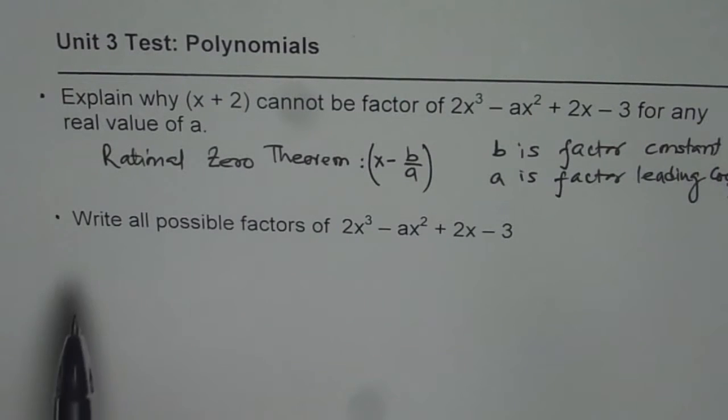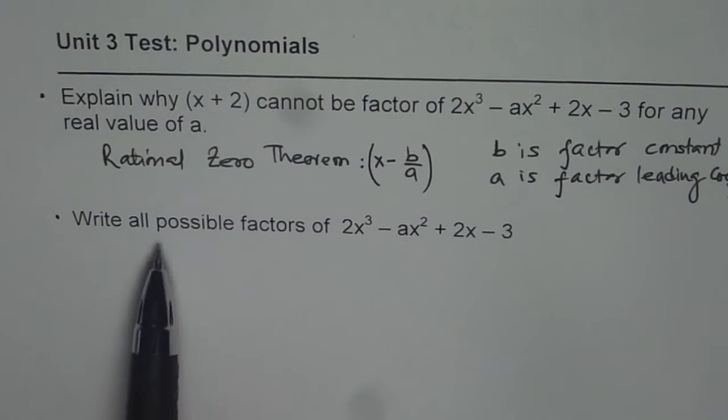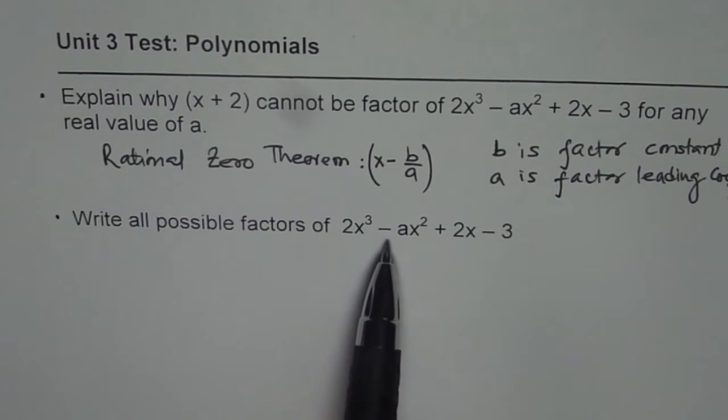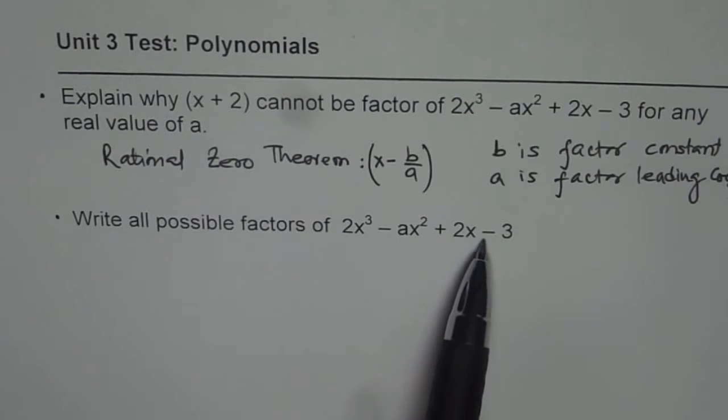So related to this, we have the next question, which is, write all possible factors of 2x cubed minus ax squared plus 2x minus 3.